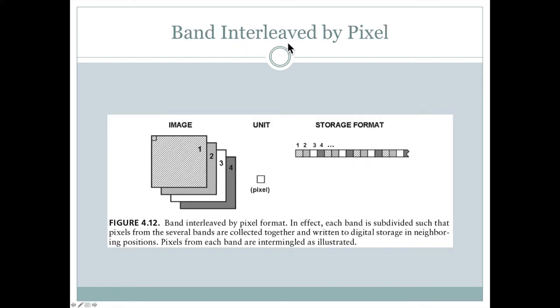The first one is called band interleaved by pixel. Basically what this means is that the first pixel of the first image is the first pixel that's stored in the file. The first pixel of the second image, which we can see would be underneath in that same upper left hand corner, would be the second pixel. The third pixel would be associated with the third band, the fourth pixel with the fourth band. And then once it's done that, it moves on to the second pixel of the first image and just keeps repeating.